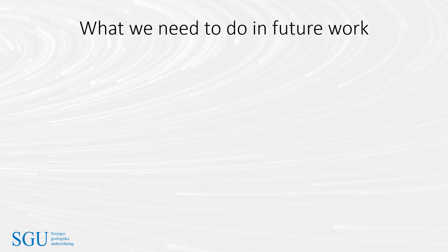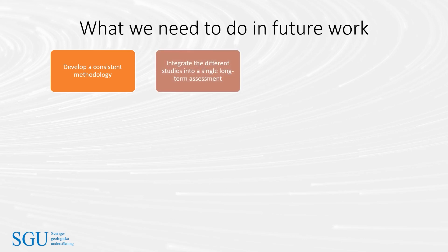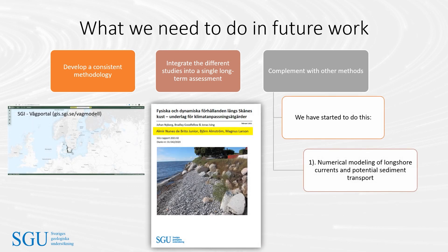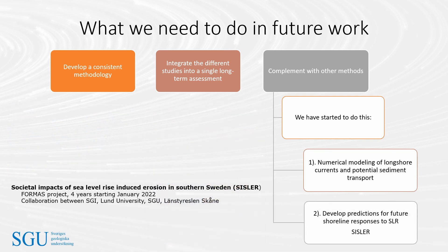There are a number of things we need to do to improve our understanding of coastal erosion in southern Sweden. These include developing a consistent methodology — for example, deciding what features to map — and integrating our different studies into a single long-term assessment. We also need to complement this work with other methods to learn more about the processes of erosion. We have started to do this through numerical modelling of longshore currents and potential sediment transport from historical wind and wave data, and by developing predictions for future coastline responses to rising sea level. This is the subject of a new four-year research project beginning in 2022, involving collaboration between the Swedish Geotechnical Institute, Lund University, the Geological Survey of Sweden, and Region Skåne.